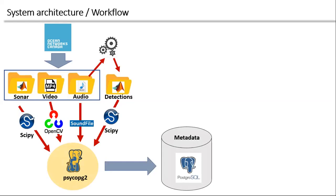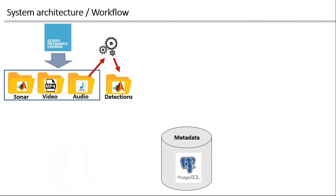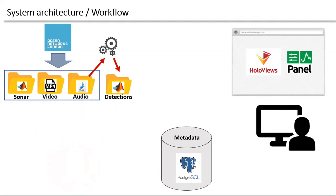The first step was basically to make sense of all those data — read them and put all the metadata into a Postgres database. For the Matlab files I used the scipy package and stored frame rates, length, frequencies, and so on. For the video I used OpenCV, and for audio the soundfile package to read WAV files. I also loaded the detections. You do that once, and then you have a Postgres SQL database with all the information that you can easily query.